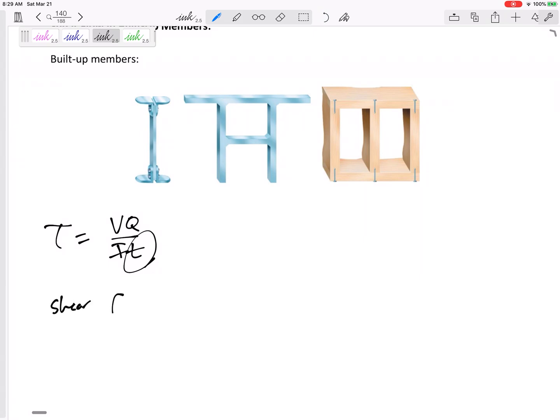And it's not really a flow, but the shear flow, lowercase q we're going to call it, is VQ over I. So it's like VQ over IT just without the T. It's like VQ over IT without the T. And let's think about the units here.